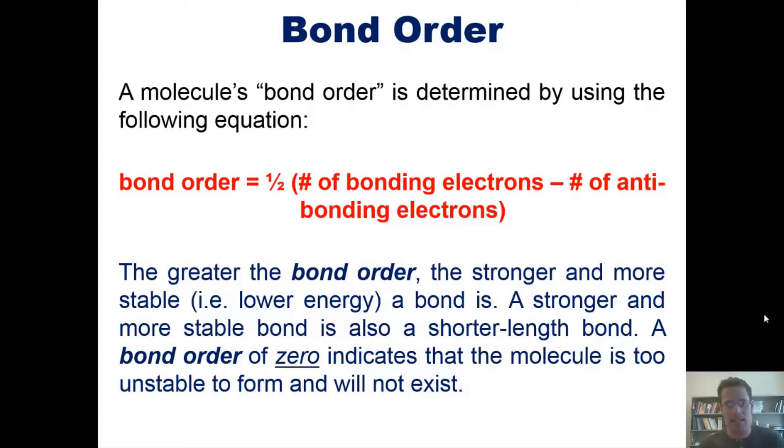And in fact, that's the bond order you get if you have the same number of electrons in your bonding molecular orbital as you have in your antibonding molecular orbital.